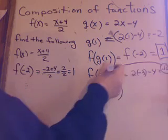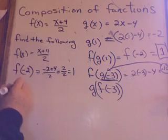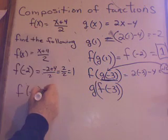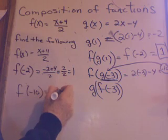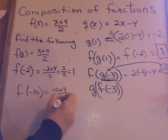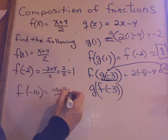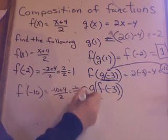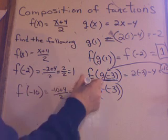So now, I do f of negative 10. In the f equation, so negative 10 plus 4 over 2. Negative 10 plus 4, negative 6 over 2, negative 3. So, final answer for this problem, negative 3.